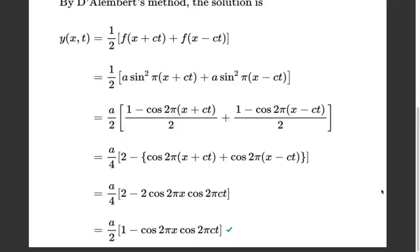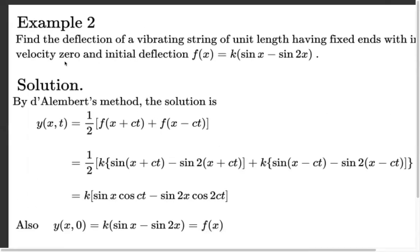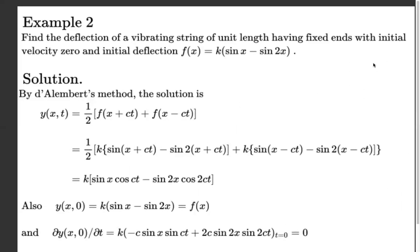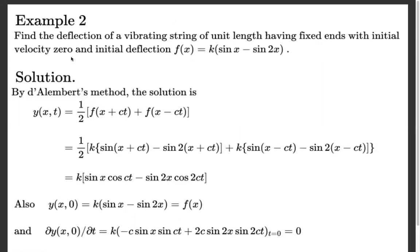Moving on to Example 2: Find the deflection of a vibrating string of unit length having fixed ends, with initial velocity 0 and initial deflection f(x) = K·(sin x - sin 2x). Given: ∂y/∂t at (x, 0) = 0, and y(x, 0) = K·(sin x - sin 2x). Using D'Alembert's method, y(x, t) = (1/2)·[f(x + ct) + f(x - ct)].